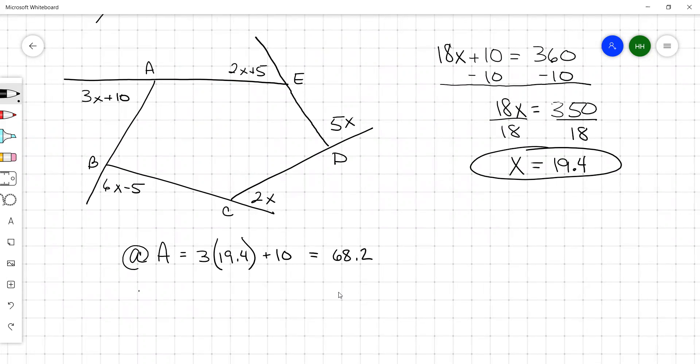And then we got at vertex B. That's 6 times 19.4 minus 5. 6 times 19.4 minus 5 equals 111.4.